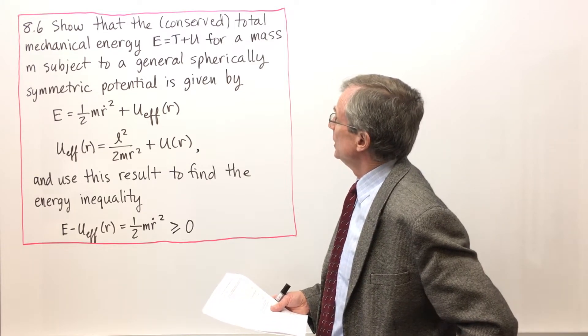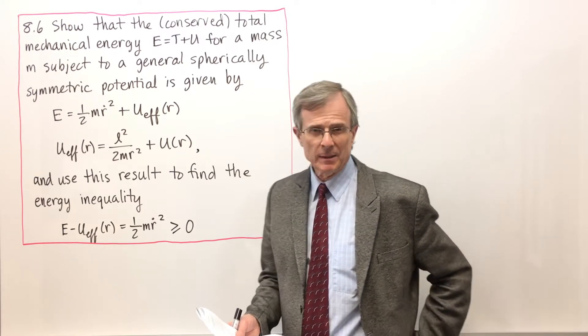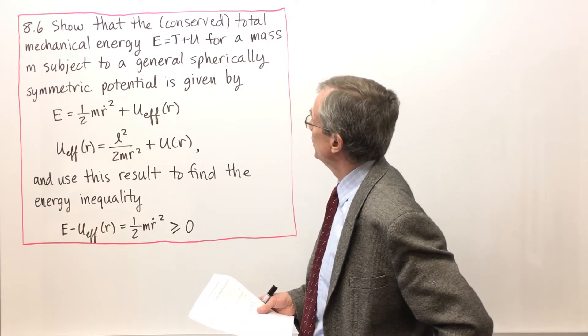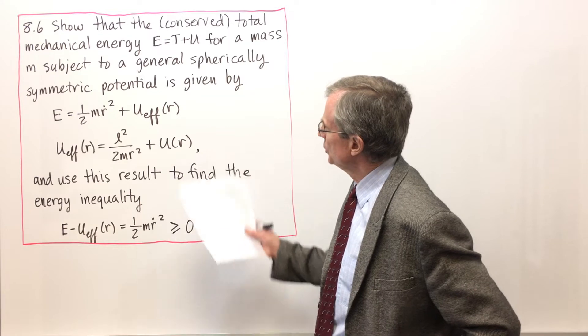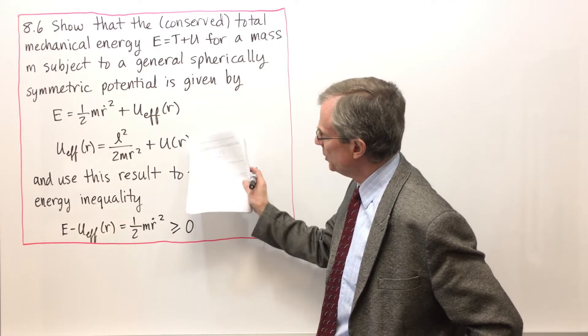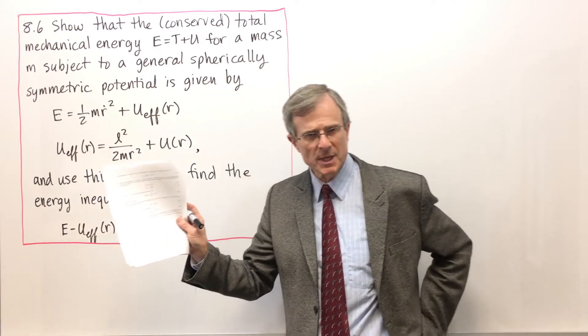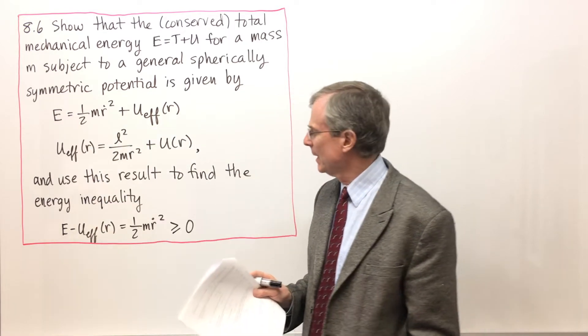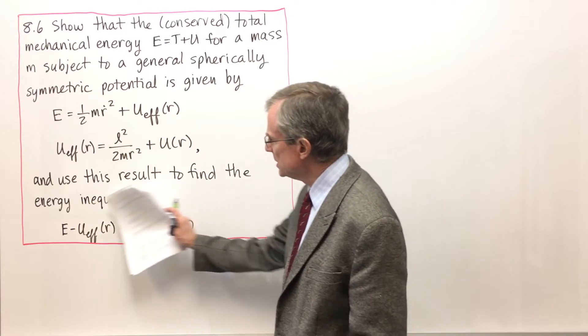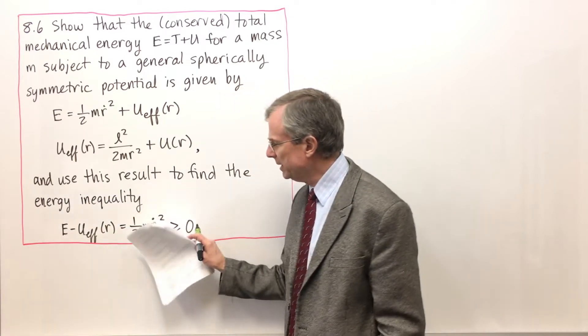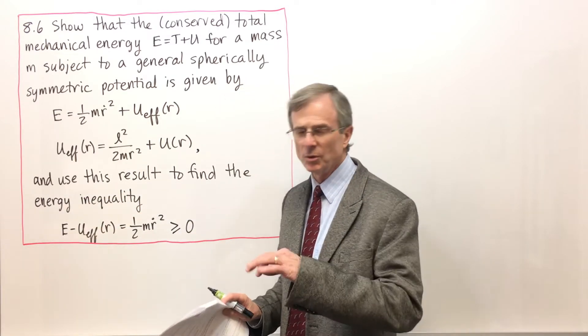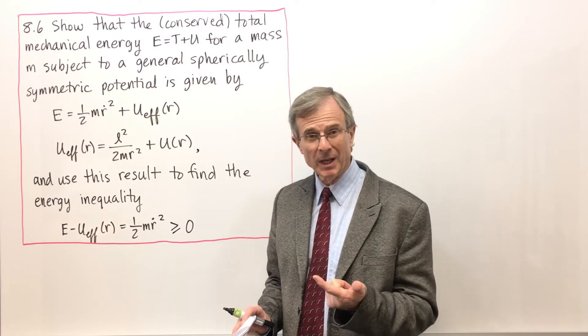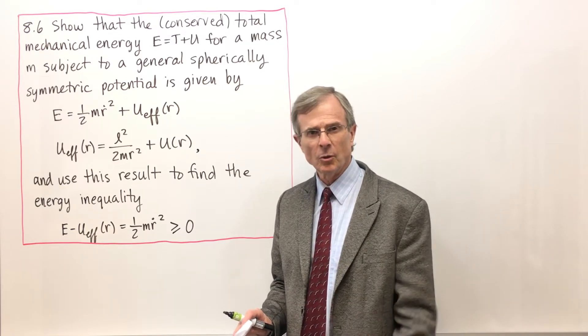So what we're going to do is try to look at the total mechanical energy in this system, T plus U, and show that it has this form where U effective is this effective potential energy that we derived in the last concept. And then we want to use this to find an energy inequality, and this energy inequality is crucial to our understanding of elliptic, hyperbolic, parabolic, circular orbits, etc.